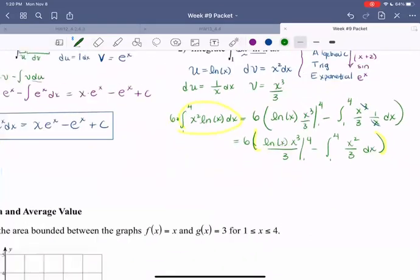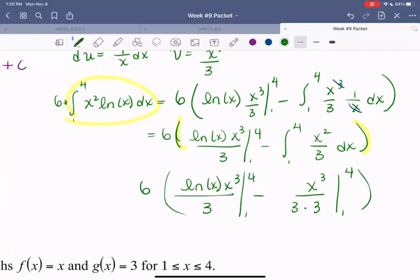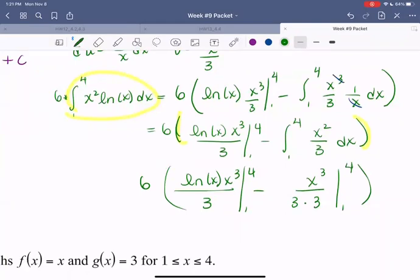Finding the antiderivative of x squared over 3, using the antiderivative power rule, we get x cubed over 3 times 3, because we have that 3 in the denominator. Then we're evaluating from 1 to 4. We're almost ready to evaluate.